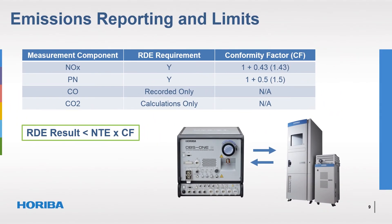Once the RDE results have been calculated and reported for both the total trip and the urban phase, they are compared to the mandatory limit and also the value stated by the vehicle manufacturer in its certificate of conformity. An allowance is made to the RDE results because of the higher uncertainty of the PEMS equipment and measurement method compared to the chassis laboratory test. The current conformity factor for NOx is 1 plus 0.43, where 0.43 is the uncertainty factor of the PEMS. For particle number, the conformity factor is 1 plus 0.5.